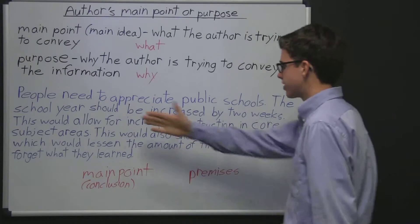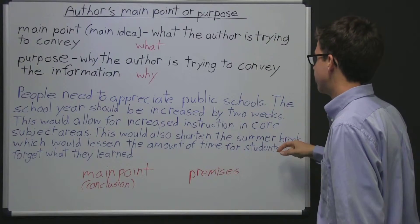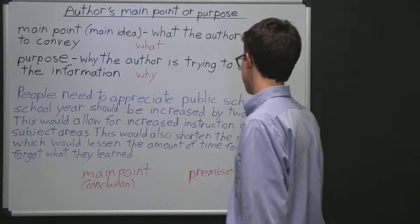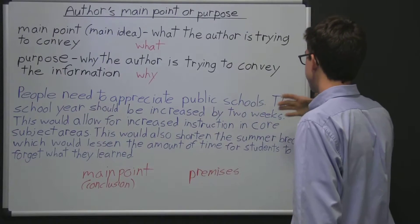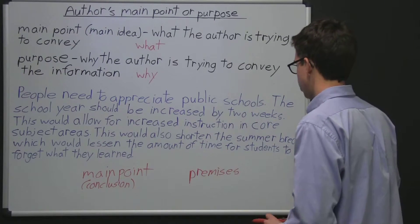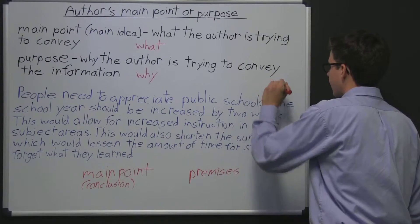So these next two sentences talk about why it'd be good to increase the school year by two weeks. They don't talk about why people need to appreciate public schools more. So these two sentences, these last two sentences are basically premises backing up this sentence right here, saying the school year should be increased by two weeks. So the second sentence here is the main point.